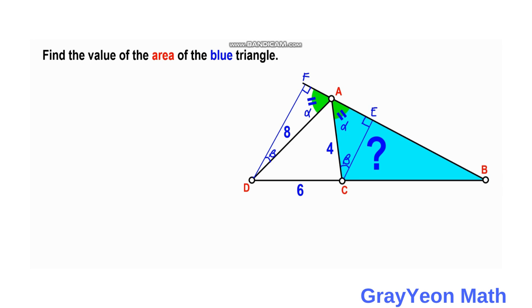And if we label this segment as small letter A and this as B, then since you have these two triangles are actually similar because they have the same angles—angle, angle, angle similarity—